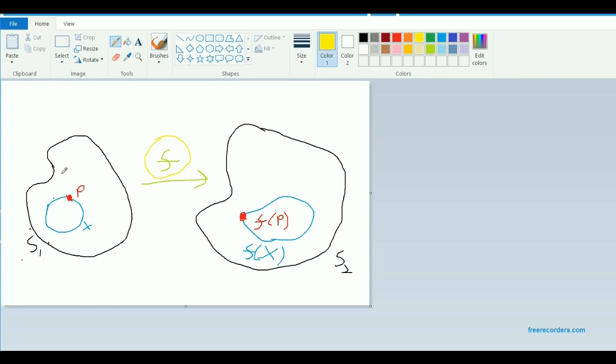that each limit point P of our original subset X actually gets mapped under F to a new point, F of P. And we require that that point F of P should be a limit point of this new thing, F of X.